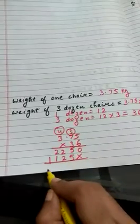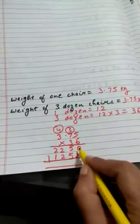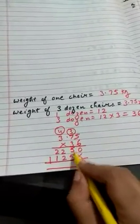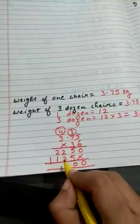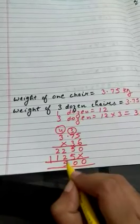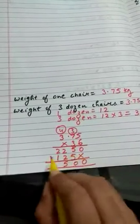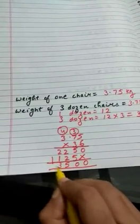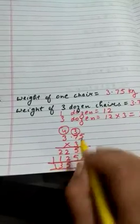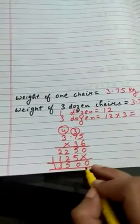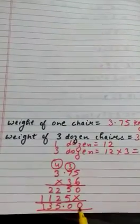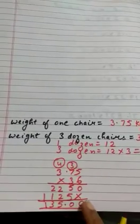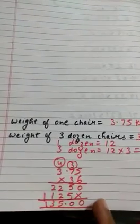Now we will add it. Hum isko add karenge. 0 as it is jayega. 5 plus 5, 10. 10 ka 0, 1 upar. 2 plus 2, 4. 4 plus 1, 5. 1 humne kaun sa add kiya hai, carry wala. 2 plus 1, 3. Aur 1 as it is. Bete, point ke baad 2 digits hai, to yahan par bhi hum 2 digits se pahle point lagayenge. Aur aapne is baat ka dhyan rakhna hai ki aapko 2 digits se pahle hi lagana hai. Right se start karenge aap.